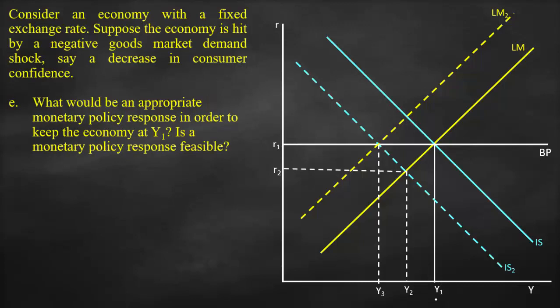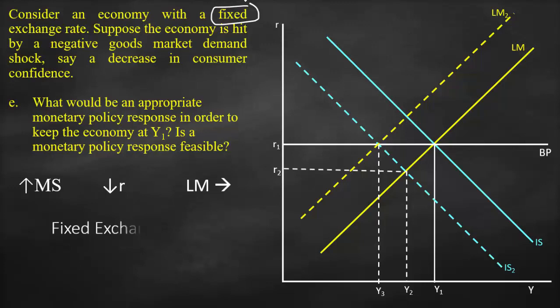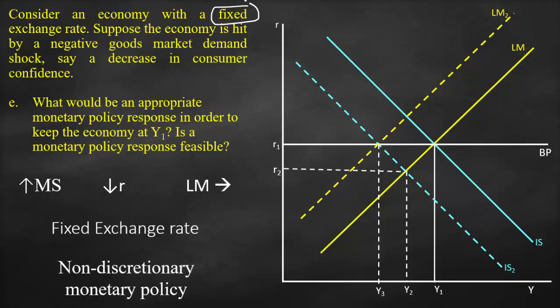For the final part — what would be an appropriate monetary policy response to keep the economy at Y1, and is it feasible? Monetary policy involves changes in money supply and interest rates, which affect the LM curve. However, under a fixed exchange rate, any change in money supply that changes the interest rate will affect the exchange rate. Therefore, to maintain the fixed exchange rate, monetary policy cannot be used independently. This means monetary policy is non-discretionary — it is not a feasible tool in this context.